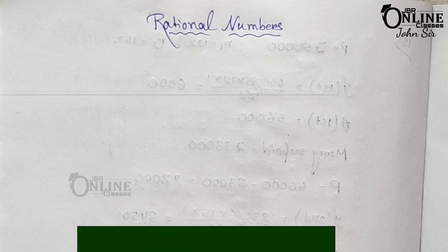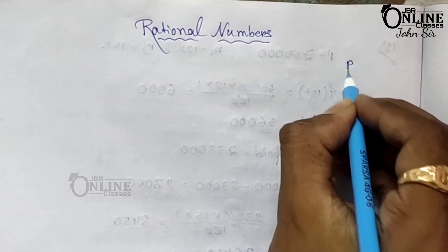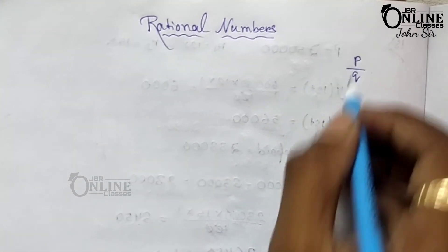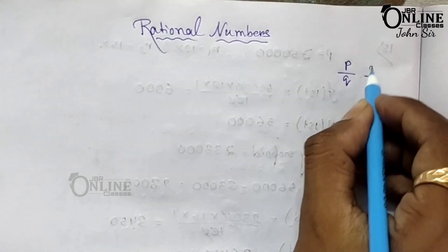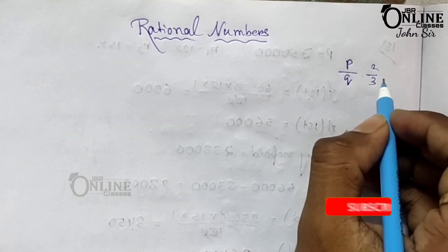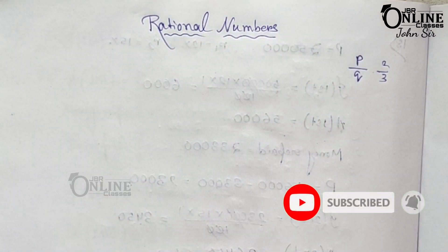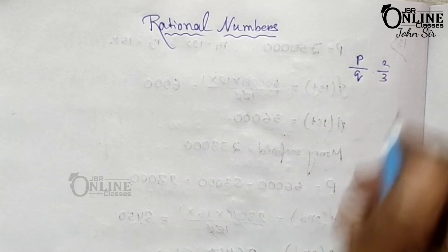So what is a rational number? The number that can be expressed in P by Q form is called a rational number. Like 2 by 3, 4 by 5, 7 by 8 — any number that can be expressed in P by Q form, that may have fraction form, is called a rational number.